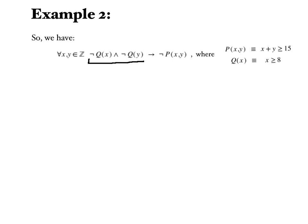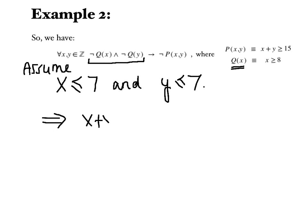So we're assuming then that not Q of X and not Q of Y. In other words, that X is not greater than or equal to 8, and Y is not greater than or equal to 8, which is the same thing as saying, you know, X is less than 8, and Y is less than 8, or that X is less than or equal to 7, and Y is less than or equal to 7. And this tells us that X plus Y must be less than or equal to 7 plus 7, which is equal to 14.